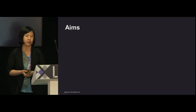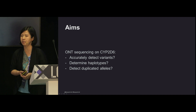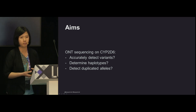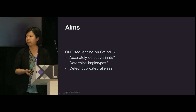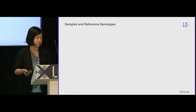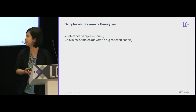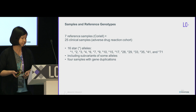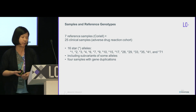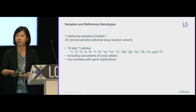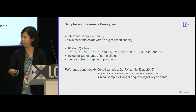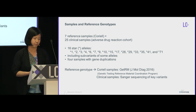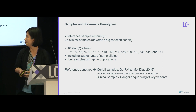That brings us to nanopore sequencing. We wanted to see whether we can sequence the CYP2D6 gene and detect all variants, determine haplotypes, and — in samples with gene duplication — determine which allele is actually duplicated. We included several reference samples from Coriell and 25 clinical samples from our own adverse drug reaction cohort — a well-mixed sample set including 16 different star alleles, subvariants, and samples with gene duplication. Reference genotypes for Coriell samples came from a published dataset (GRM), and clinical samples were confirmed by Sanger sequencing.